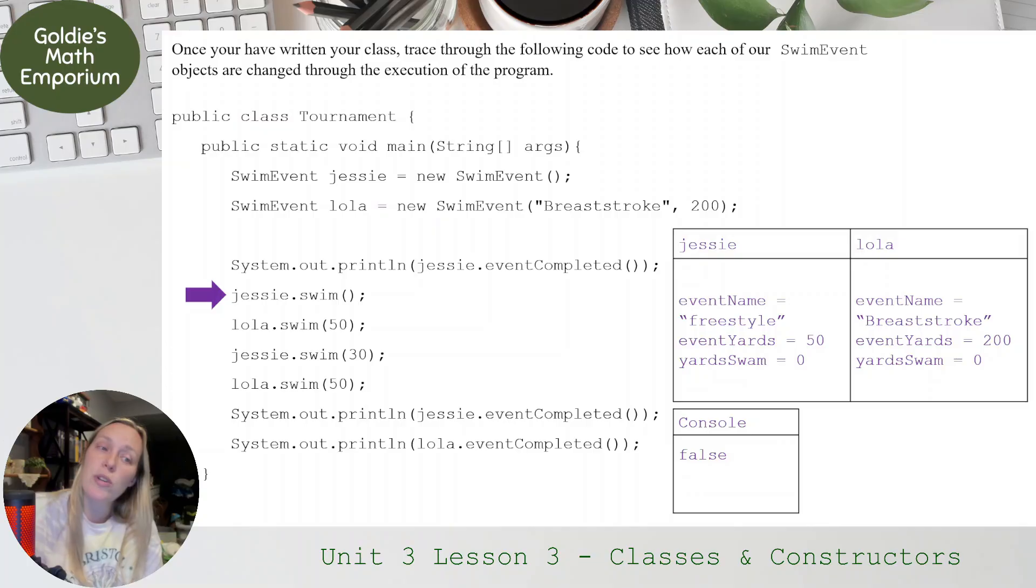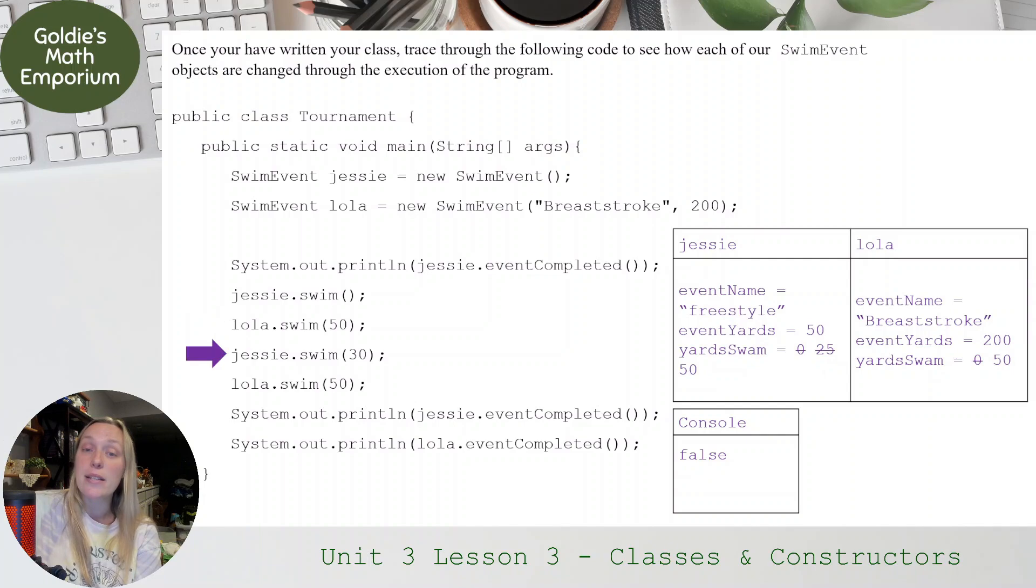And then now we have Jesse.swim. So notice how for all of these next lines, we are using our reference variable name in order to gain access to the data. So Jesse means we're going to Jesse's data, and he's going to swim. What did the swim method do that has no parameters? The swim method with no parameters, all it did was added 25 to yardsSwim. So yardsSwim for Jesse, it gets 25 added to it. And the reason is because if you add 25 to it, it doesn't exceed eventYards. So yardsSwim for Jesse is now 25. Lola.swim(50). So that meant Lola, she's going to be using the swim method that actually accepts a parameter as an integer parameter. So we're going to go to that. 50 is going to get added to Lola's yardsSwim.